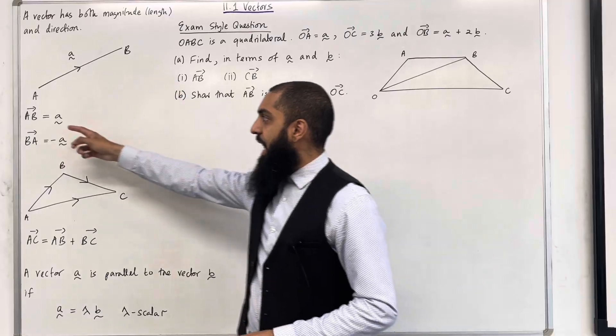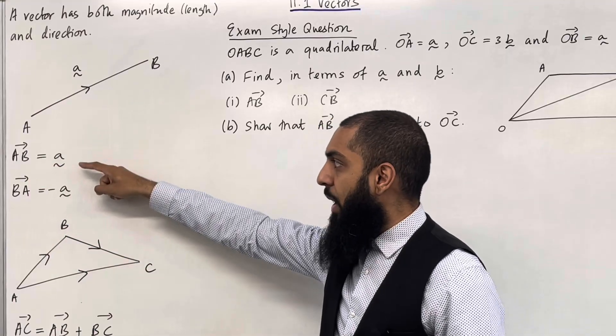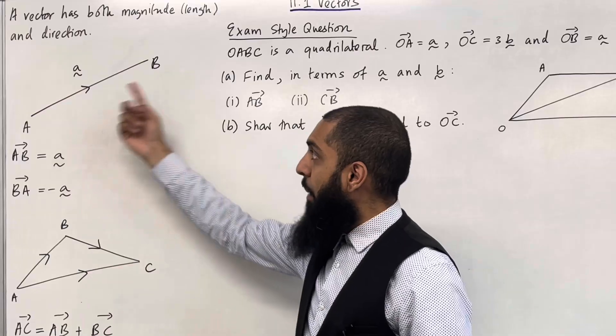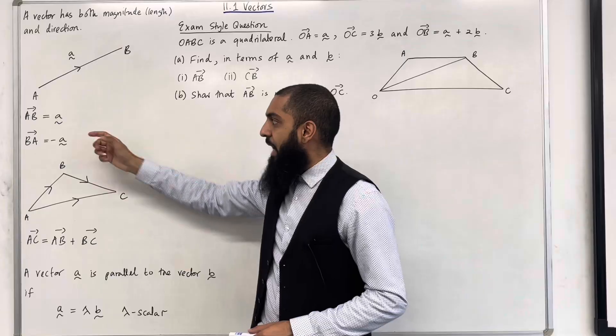So over here we have the vector A to B, which is denoted by a squiggle. The vector B to A is going in the opposite direction, so this time it is minus A squiggle.